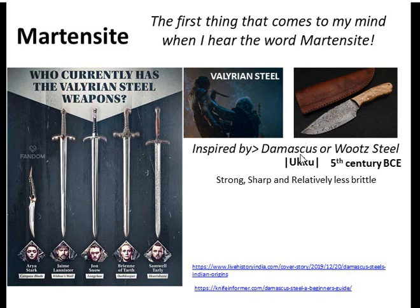This steel was made of 1.2% carbon and was known since the 5th century BC — some say even before that. The steel was strong, sharp, and relatively less brittle. There are stories about how this steel could cut a feather in two without even leaving a slight trimming mark. If you read the references given, you can look into detail how this Damascus steel was used and adopted by different peoples.